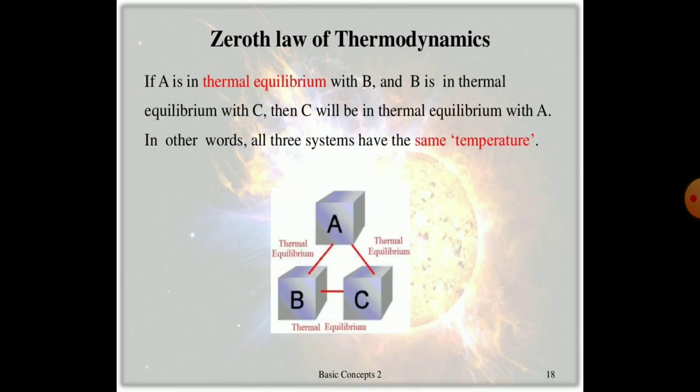The zeroth law of thermodynamics states: if A is in thermal equilibrium with B, and B is in thermal equilibrium with C, then C will be in thermal equilibrium with A. In other words, all three systems have the same temperature.